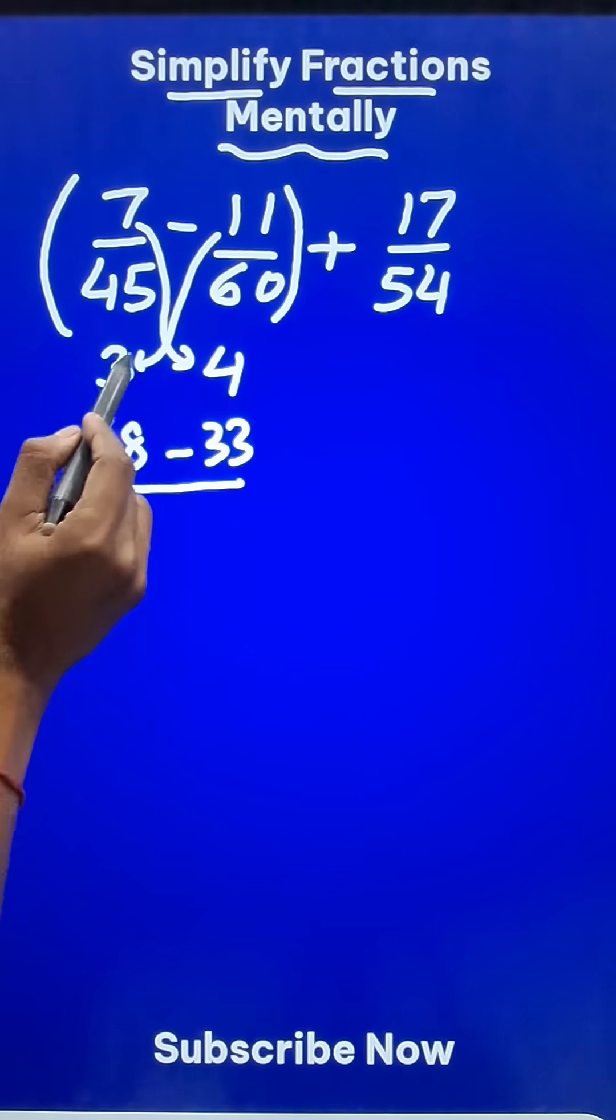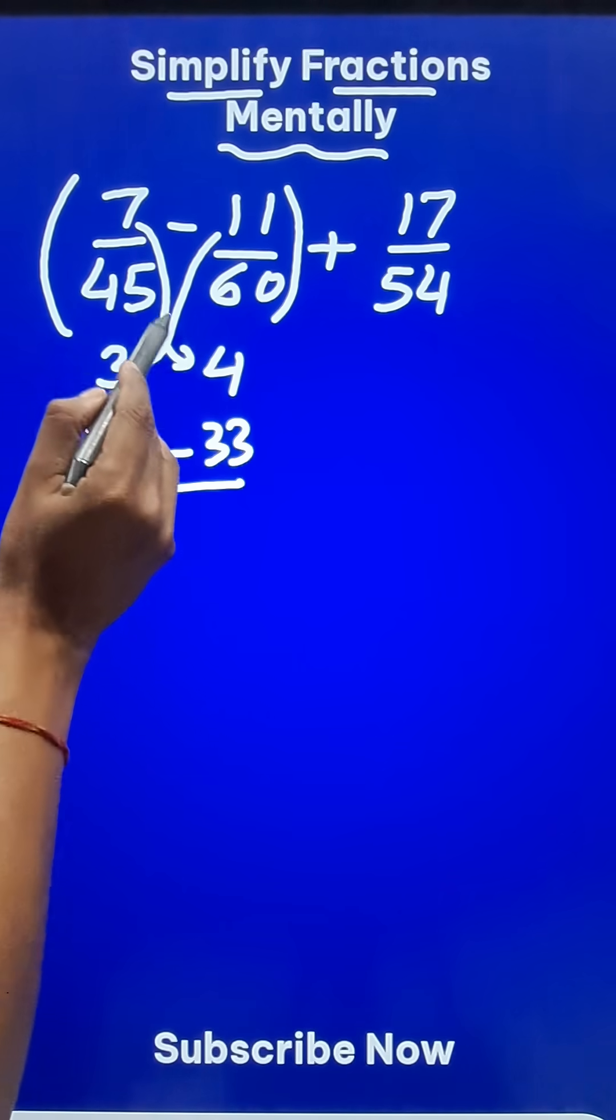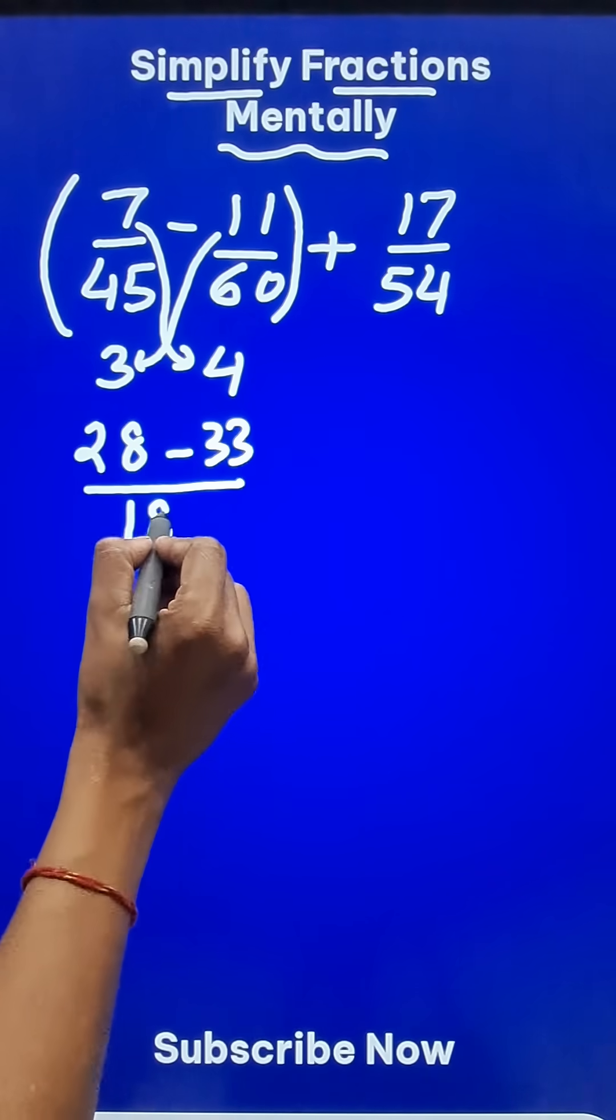And divide the result either by 60 times 3 which is 180 or 45 times 4 which is again 180. So 180 in the denominator.